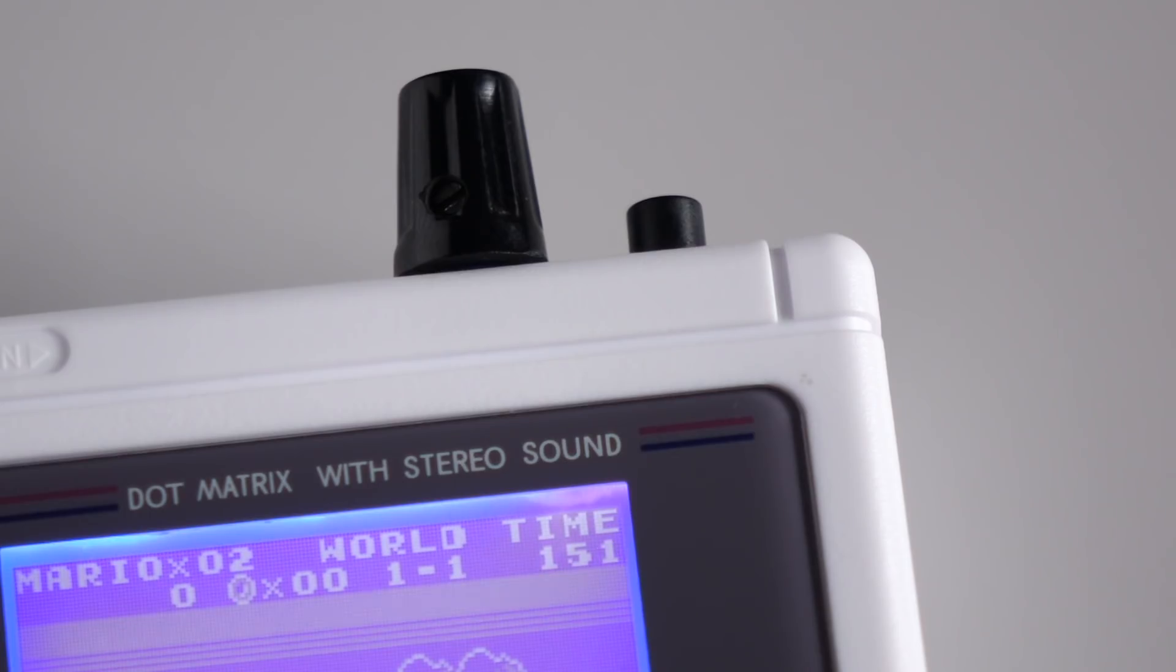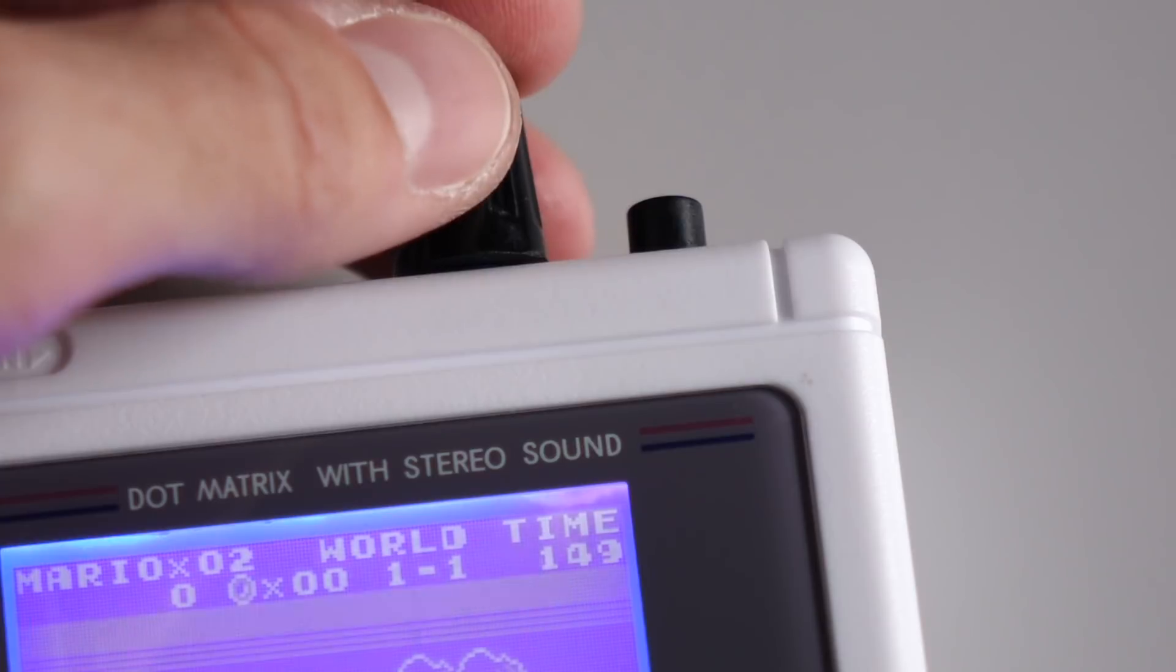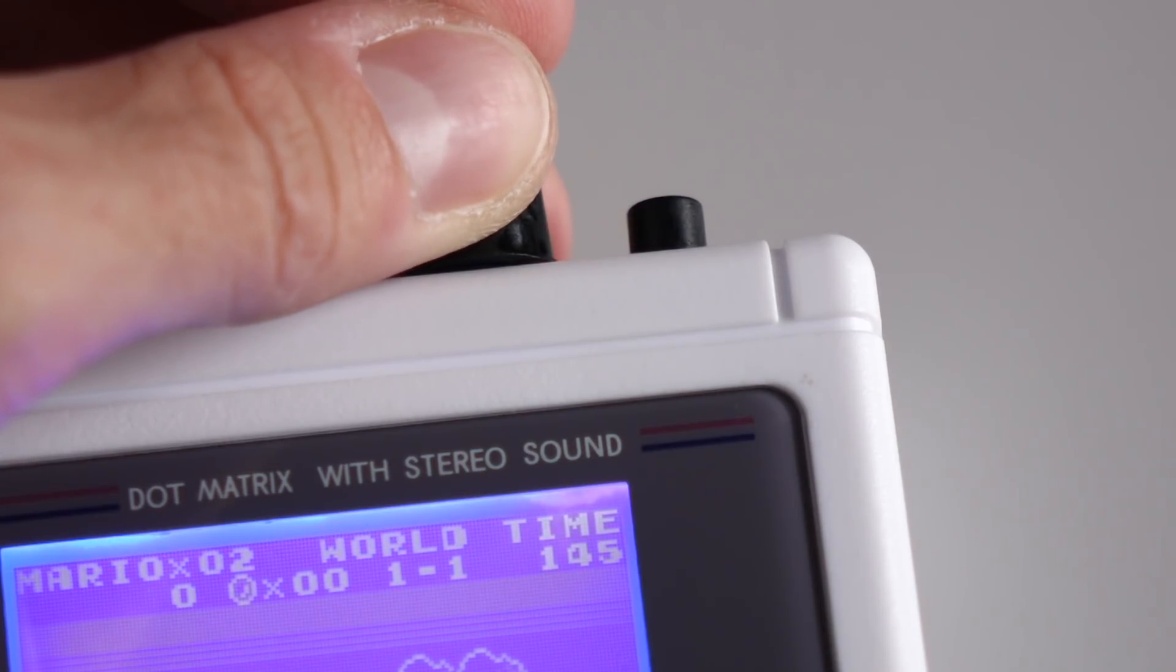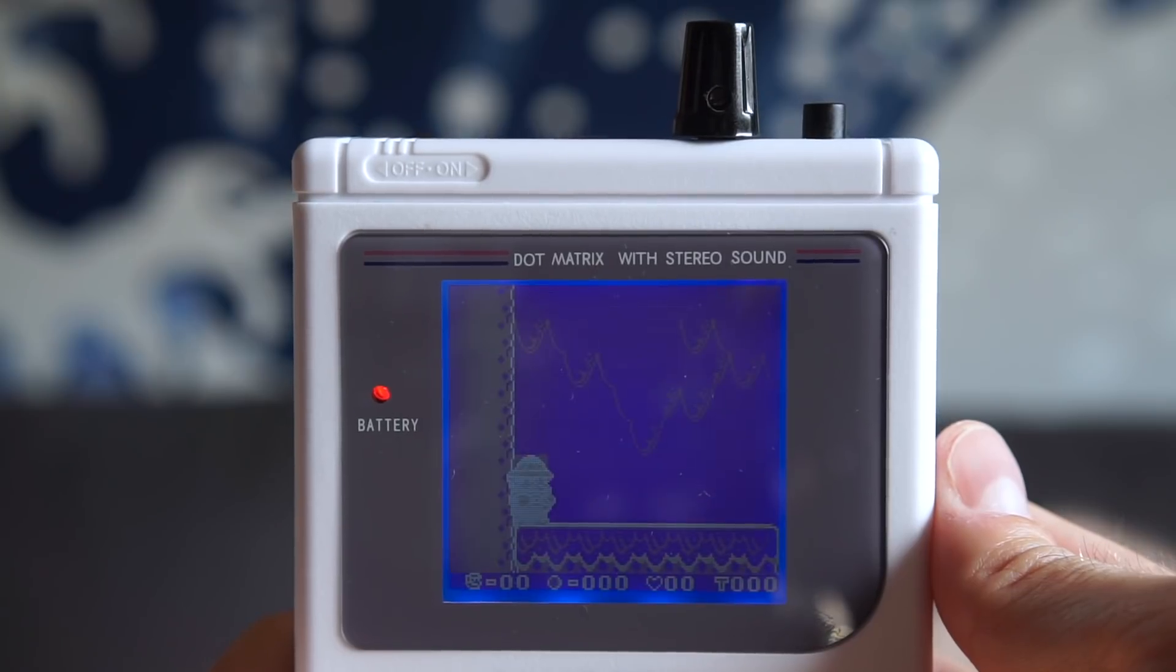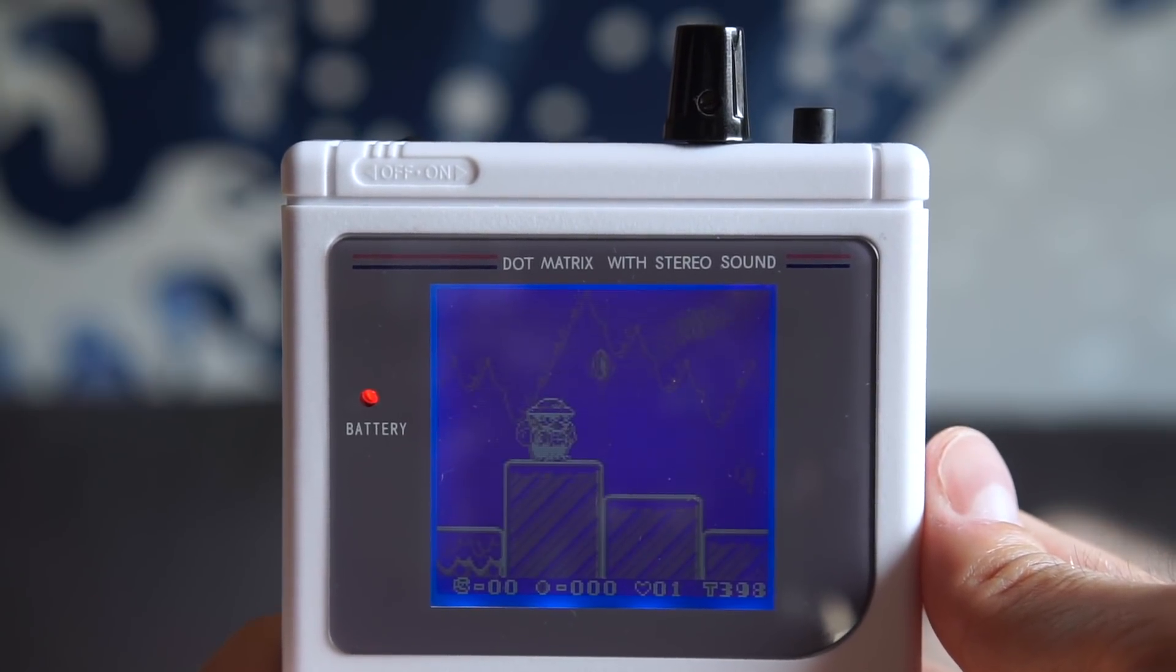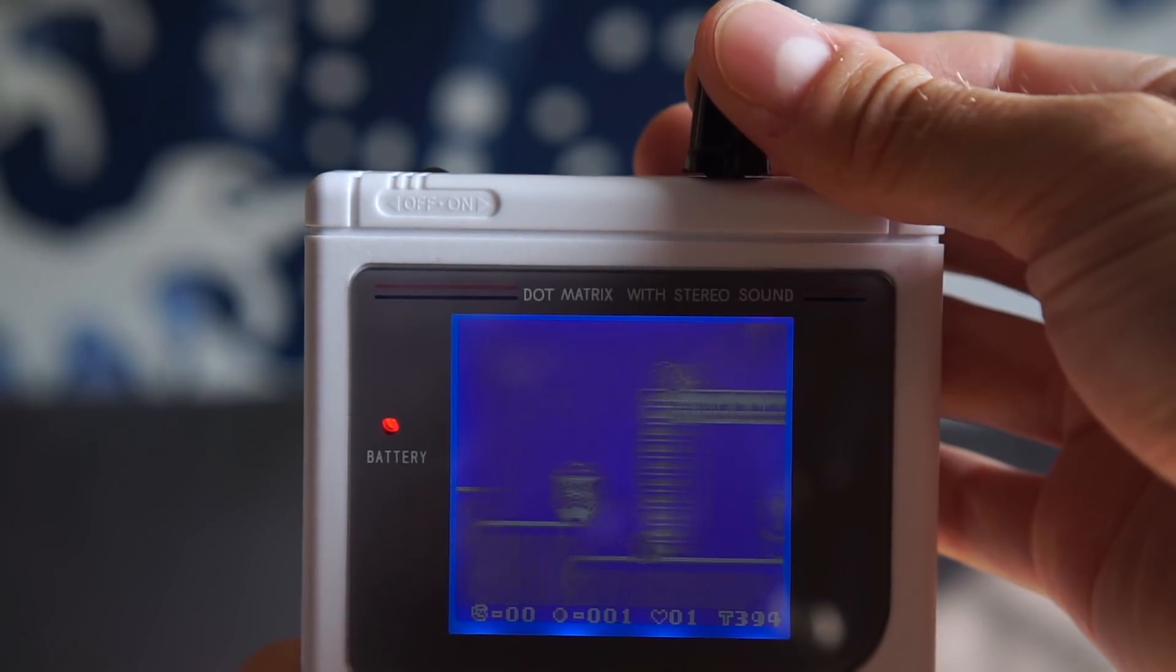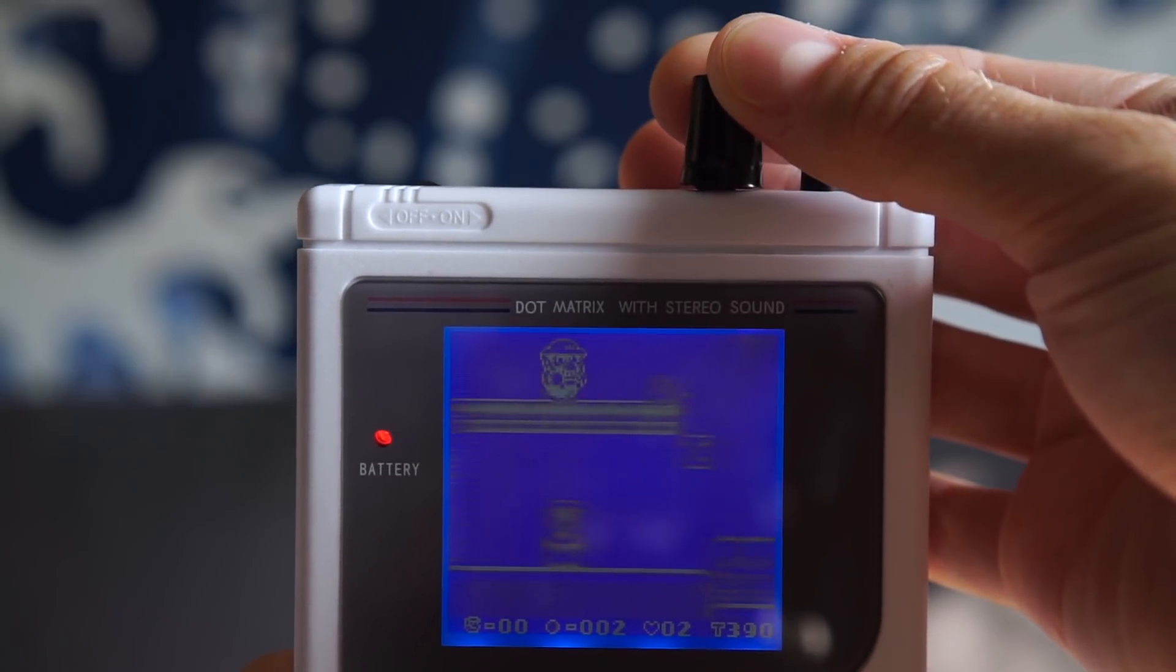The module alters the speed the Game Boy runs at, so not only does the game run slower or faster, so does the music. It's commonly used by chiptune artists, but it's also useful to speed up grinding through tedious parts of games, like in Pokemon, or to slow down tricky sections to practice them.